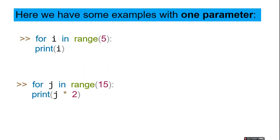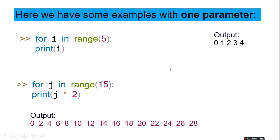So let us start. We have some examples with one parameter. For i in range 5, print i. So here the last limit is 5 and the stop position is 5. So it is printing 0, 1, 2, 3, 4. For j in range 15, print j into 2. So it will double each time the value and give you the output.